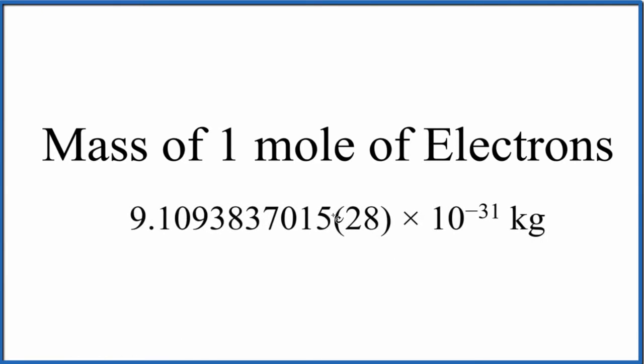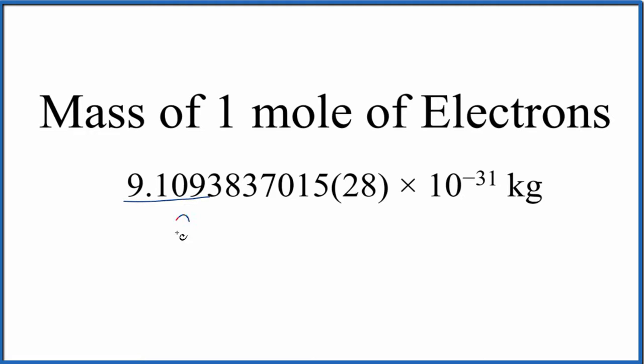One electron has this mass, and you see this 10 to the negative 31st—that means the mass for electrons is very, very small. So we have our mass here. For the purpose of this video, let's use 9.11 times 10 to the negative 31st kilogram. This number is from the National Institute of Standards in the United States. It's a very reliable number, but a bit much detail for our purposes.